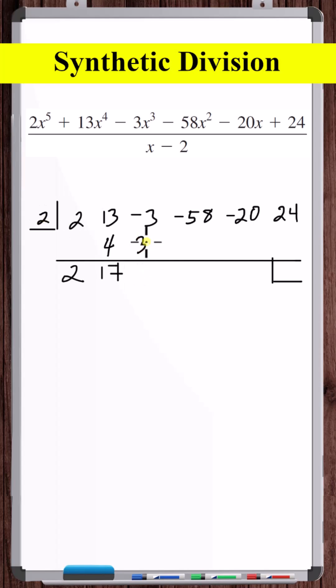Seventeen times two is thirty-four. Minus three plus thirty-four is thirty-one.